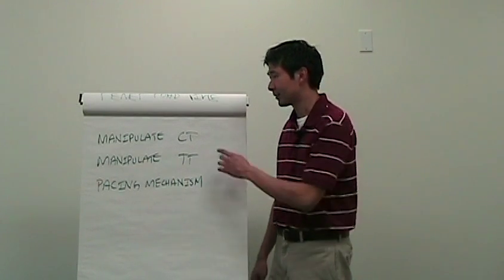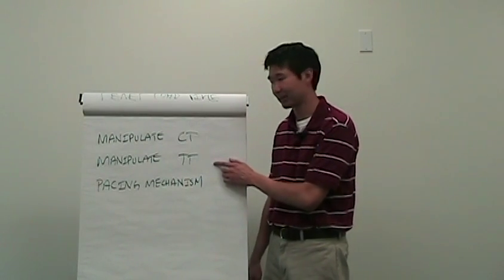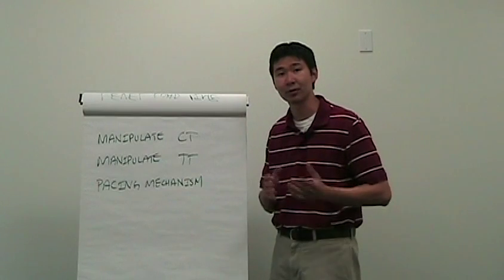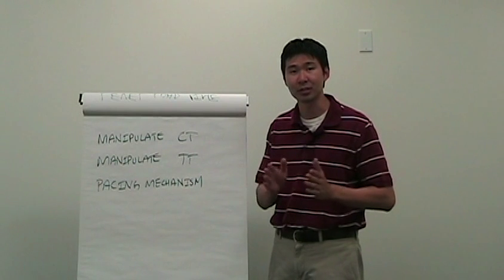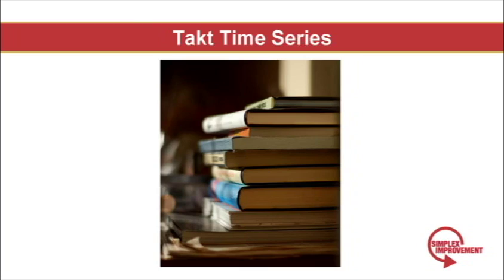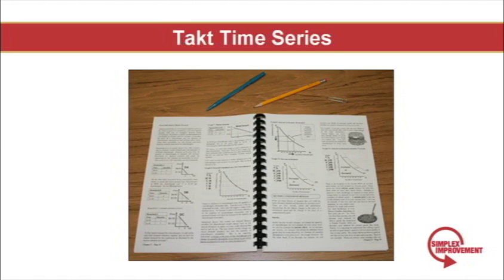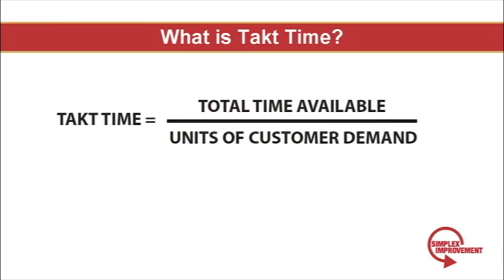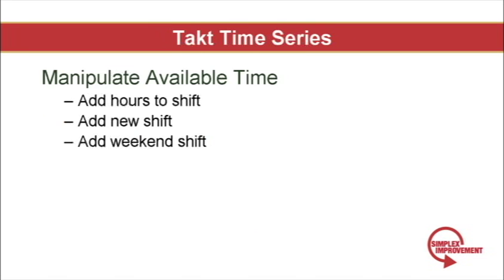Don't feel trapped by any of these concepts. There are ways to manipulate cycle time and also ways to manipulate Takt time. Takt time is nothing more than a pacing mechanism to help serve your organization, not the other way around. So use it in a way that helps you achieve your goals. Textbooks will always tell you that Takt time is set by the customer — from an academic perspective they are absolutely correct — but in the real world there are options. You can manipulate your Takt time to service your organization as well as the customer, as the previous example showed. Remember, Takt time is available time divided by units of customer demand. We just manipulated number of units. What about manipulating available time? You can add a few standard hours to the end of each shift, add a whole new shift, or run on the weekends. All of these options allow you to manipulate Takt time. Again, this is a tool that serves you, not the other way around.